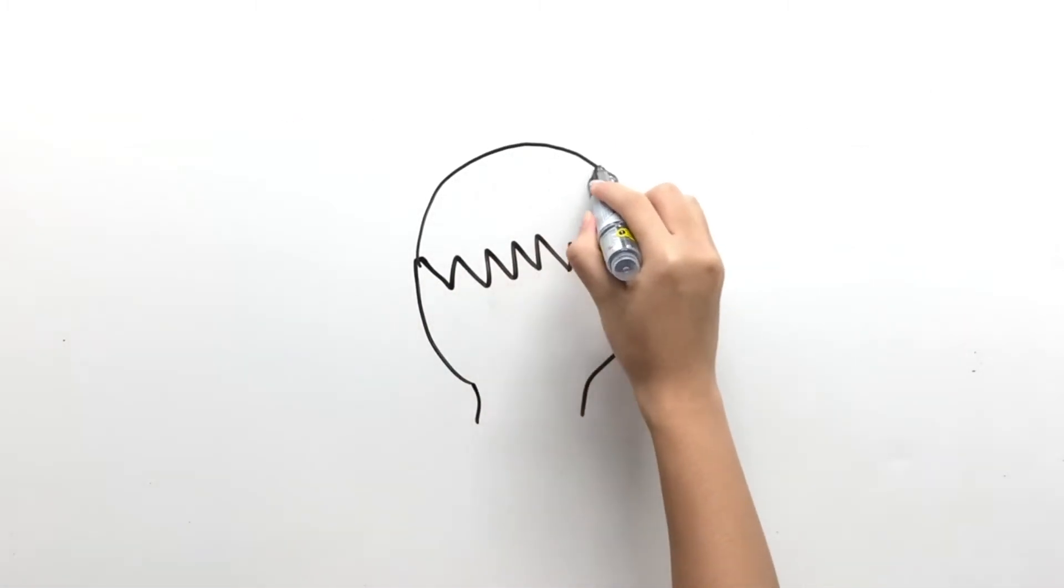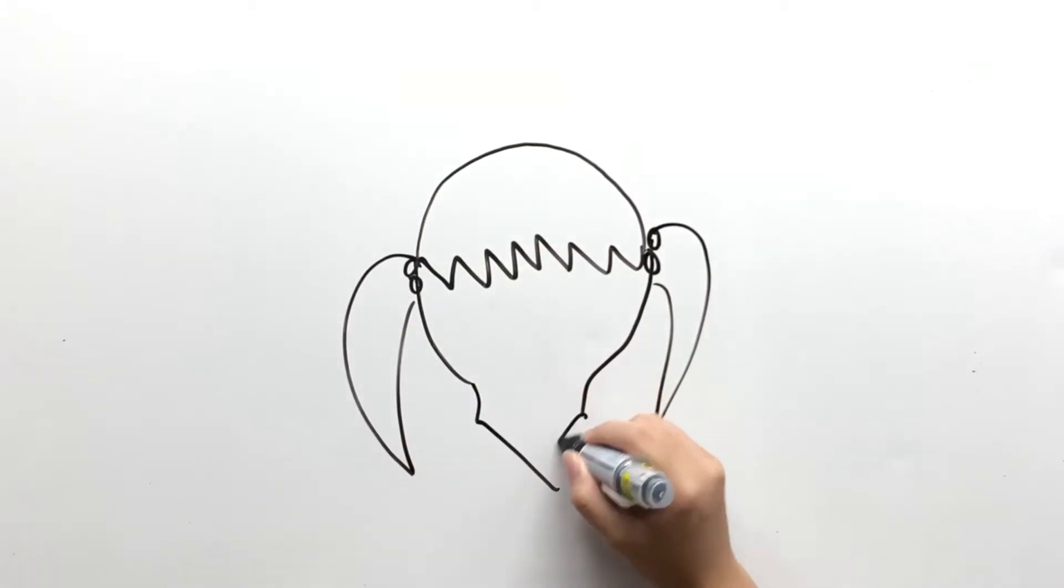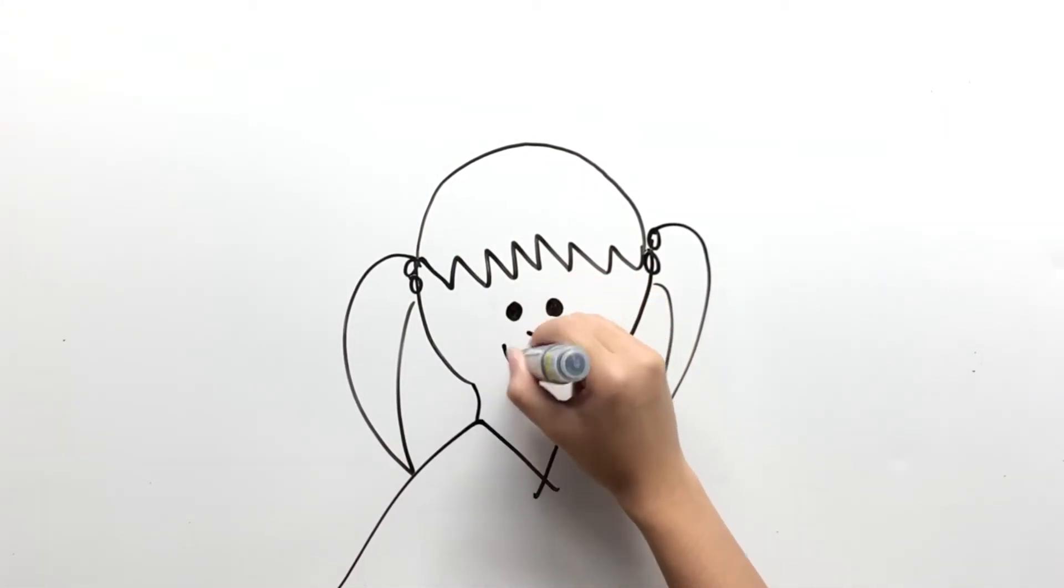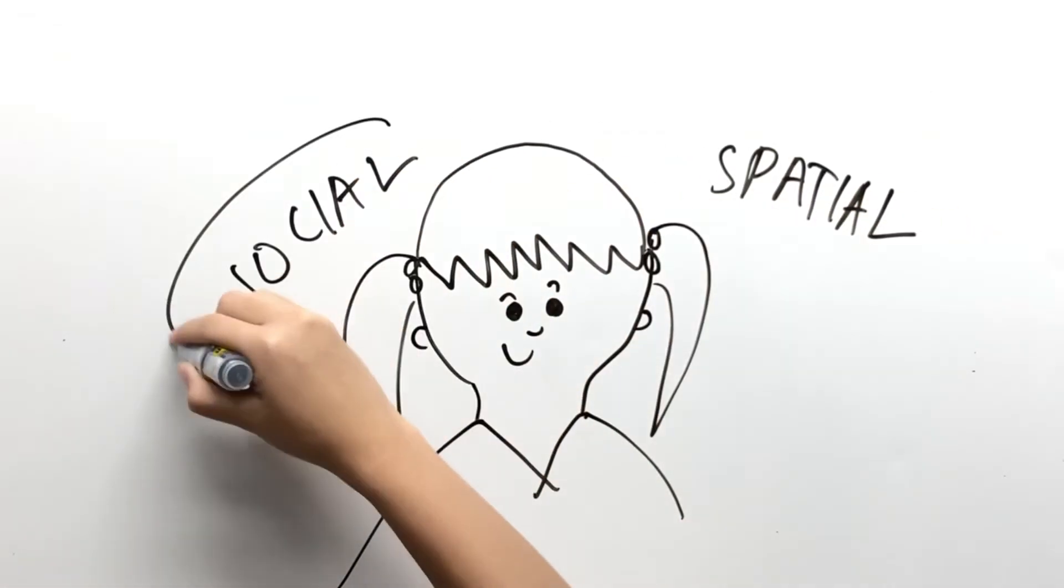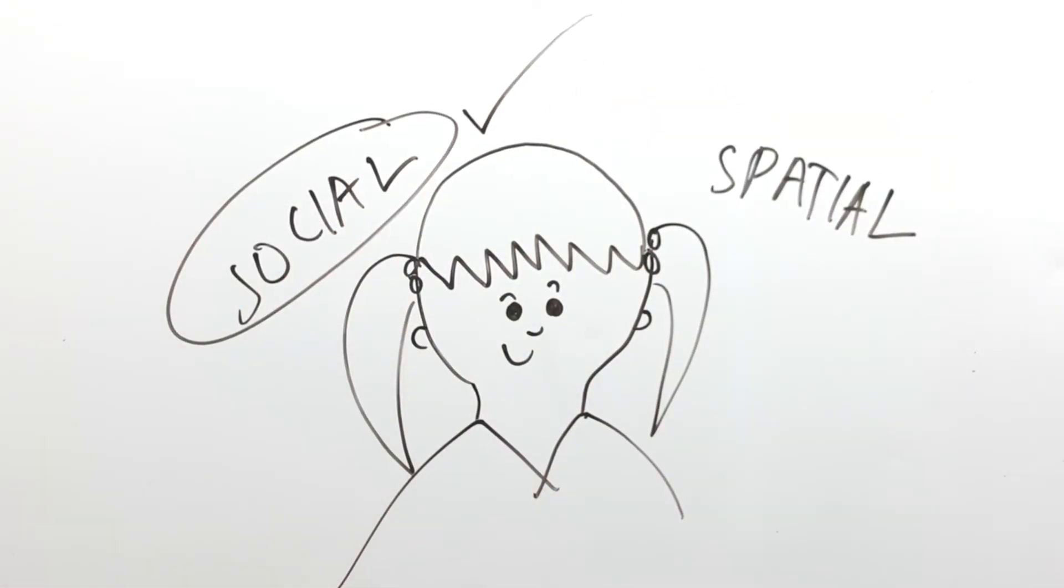This experiment showed that males performed better than females under spatial conditions. But under social conditions, females performed almost as well as males, and differences were negligible.